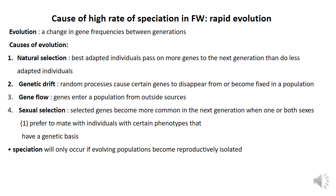Now we will discuss the cause of high rates of speciation in freshwater systems. What is speciation? Speciation is how a new kind of plant or animal species is created in any environment. Speciation occurs when a group within a species separates from other members and develops new unique characteristics.